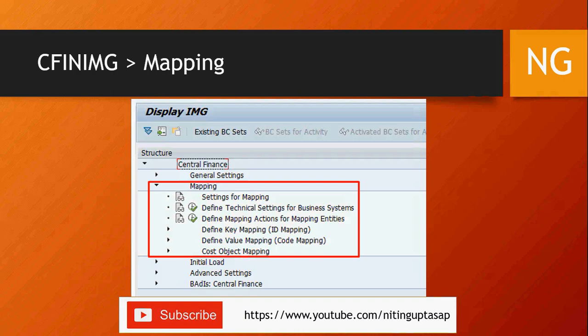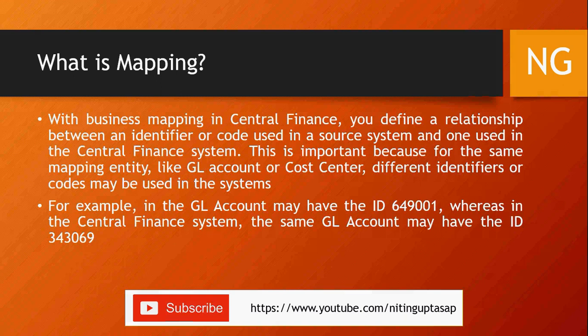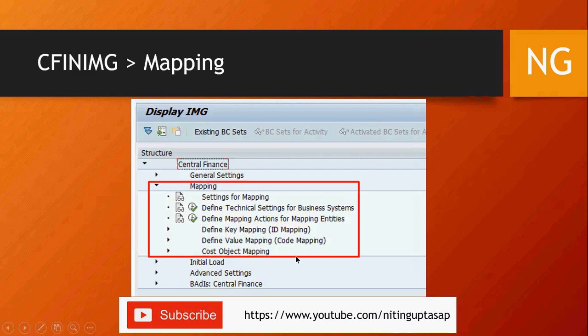To recap: we covered what mapping is, key mapping and value mapping through the upload function, and one-by-one navigation through the SPRO or CFIN IMG menu. For cost object mapping, any create, change, or delete must be done line by line from the IMG menu itself — there is no upload/download functionality available for cost objects.